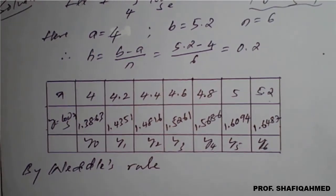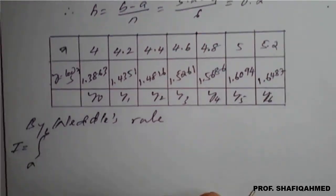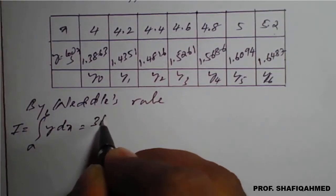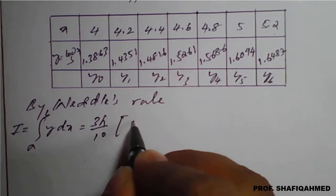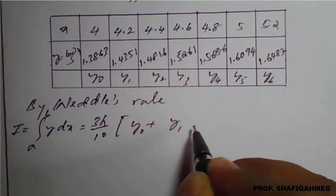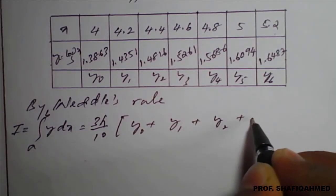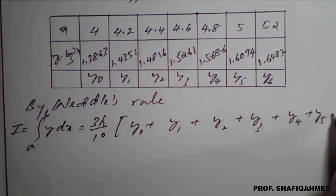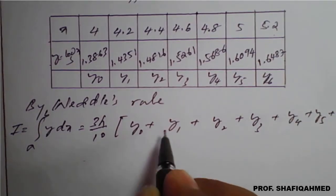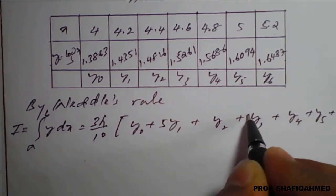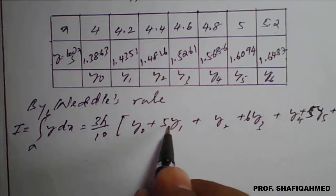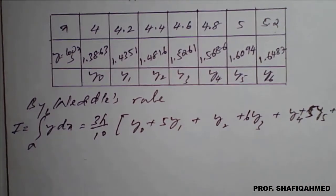By Weddle's rule, I equals integration from a to b of y dx equals 3h over 10, bracket y0 plus y1 plus y2 plus y3 plus y4 plus y5 plus y6, multiplied by 1, 5, 1, 6, 1, 5, 1 respectively. This is the formula you have to remember.